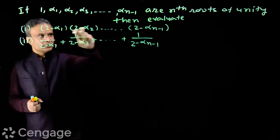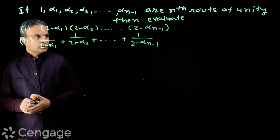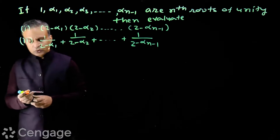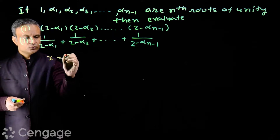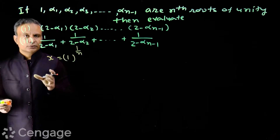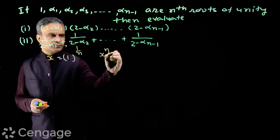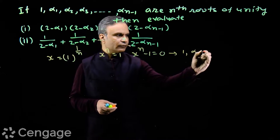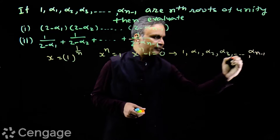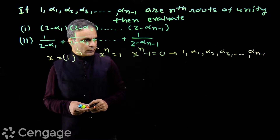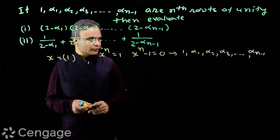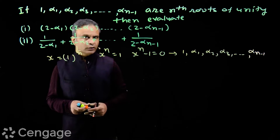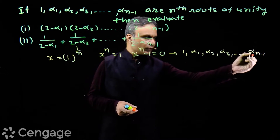We have done nth roots of unity in complex numbers. nth roots of unity means roots of the equation x = 1^(1/n), so we have x^n = 1, or x^n - 1 = 0. This equation has n roots: 1, α₁, α₂, ..., αₙ₋₁. One is a real root; other roots are non-real. We get one more real root, -1, if n is even. If n is odd, all α₁ to αₙ₋₁ are non-real.